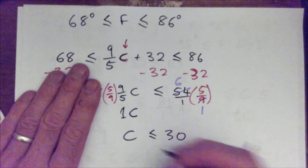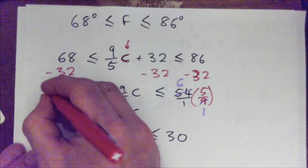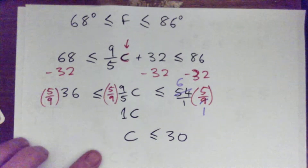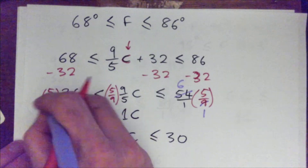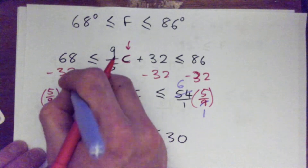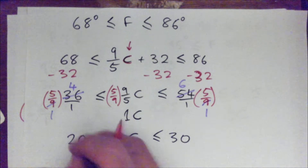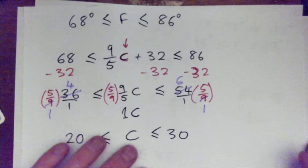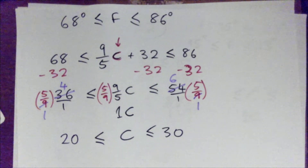Great job. And don't forget you've got to multiply this side by 5 over 9 as well — that's 36 over 1. 9 into 9 goes 1 time, 9 into 36 goes 4 times, 5 times 4 is 20. Great job. So the Celsius should be between 20 and 30 degrees.